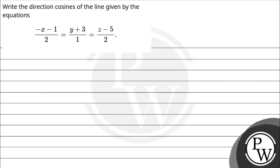Hello, let's see the question. The question says, write the direction cosines of the line given by the equation: minus x minus 1 divided by 2, equals y plus 3 divided by 1, equals z minus 5 divided by 2.